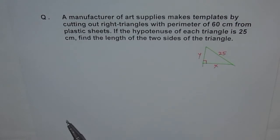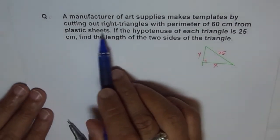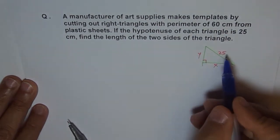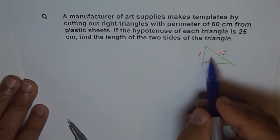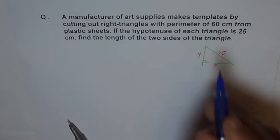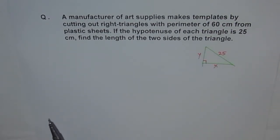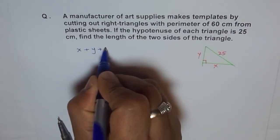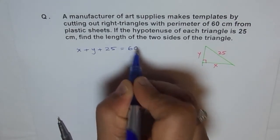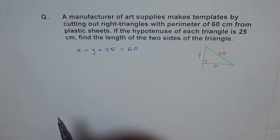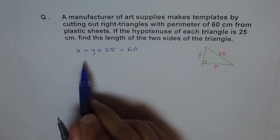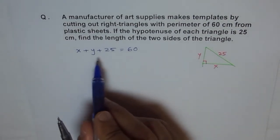Now, what are we given? By cutting out right triangles with a perimeter of 60 — so the perimeter is the sum of all three sides. So we know that the sum of these three sides is 60 cm. We can write x plus y plus 25 equals 60. That's our first relation. Now we see that we've got two variables, so we need to convert one in terms of another.